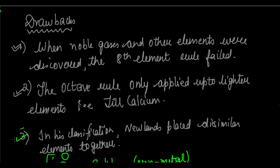So these are the three drawbacks of Newlands' classification. Although it played a prominent role in driving the concept of classification and brought about an idea, because this eighth element property is now somewhat present in the modern periodic table as well, it did form another basis for the modern periodic table. But it had its drawbacks and ultimately was rejected. This was what we called Newlands' Law of Octaves and Newlands' Classification.